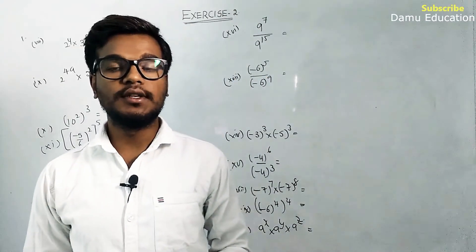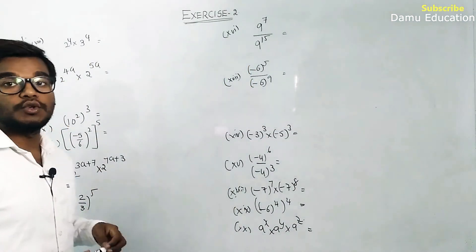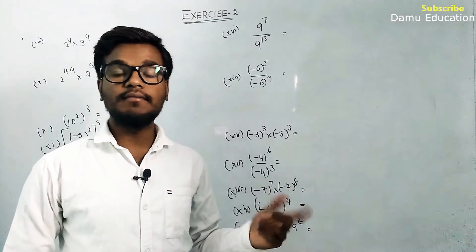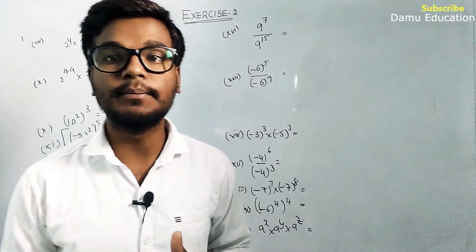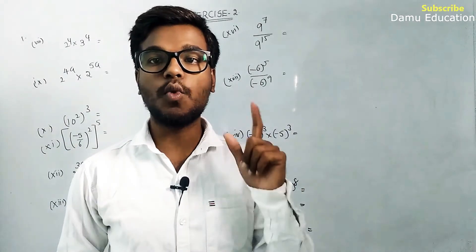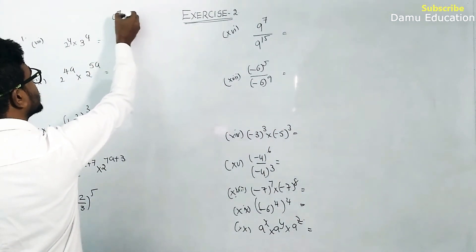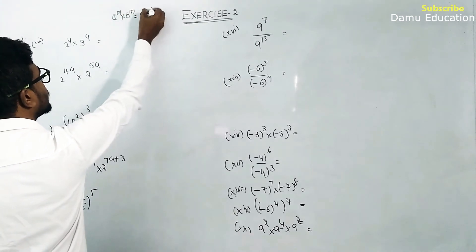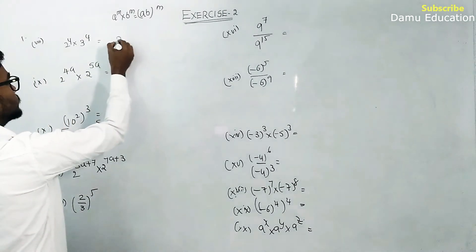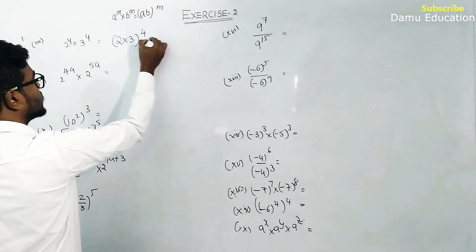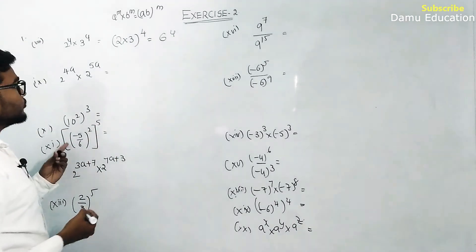Continuing the first question set: 2 power 4 into 3 power 4. Here bases are different but powers are same. We use the formula a power m into b power m equals a b whole power m. So 2 into 3 whole power 4 equals 6 power 4.